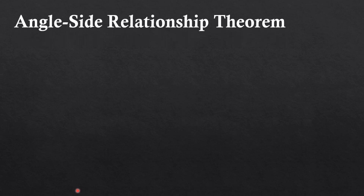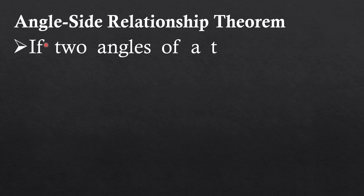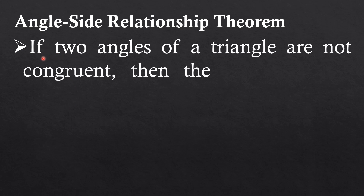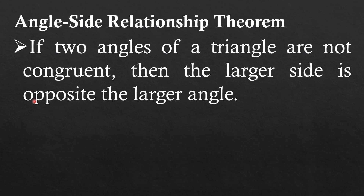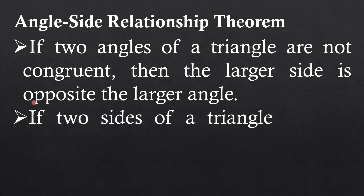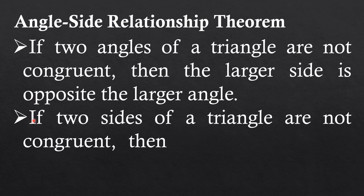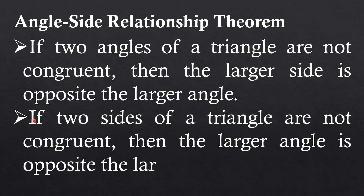Now let's discuss the angle-side relationship theorem. It states that if two angles of a triangle are not congruent, then the larger side is opposite the larger angle. It also states that if two sides of a triangle are not congruent, then the larger angle is opposite the larger side.